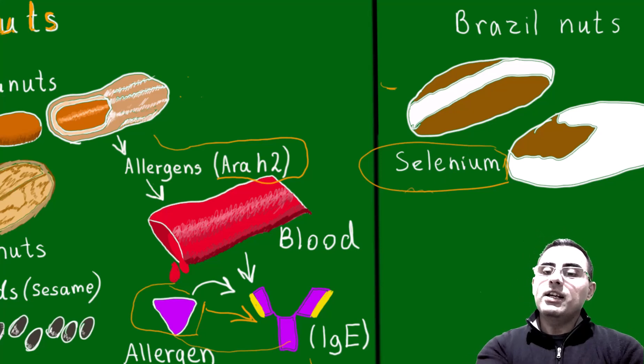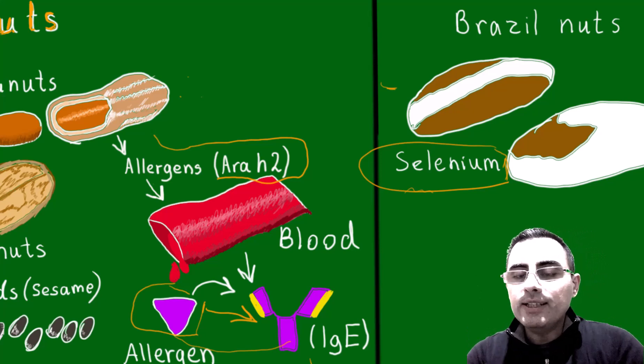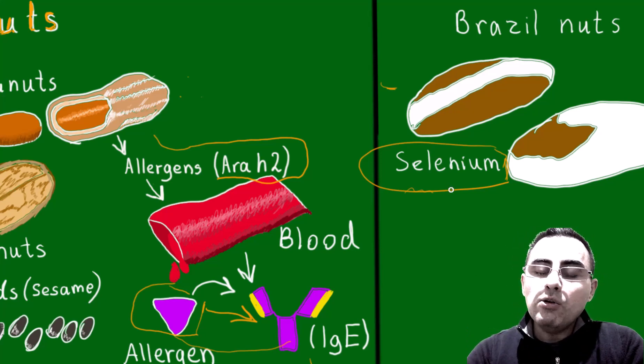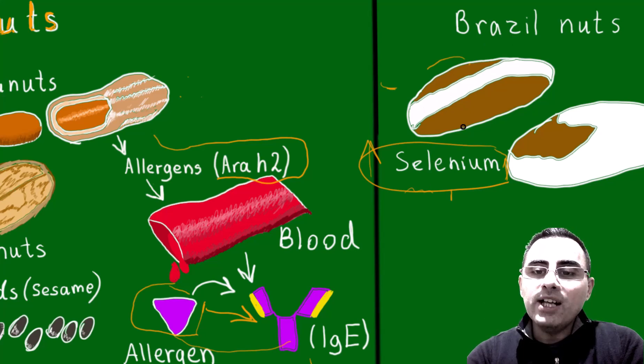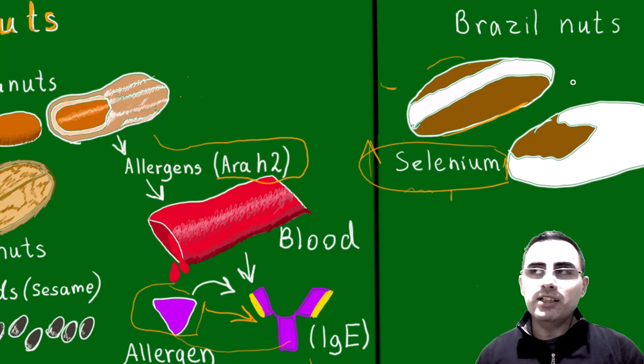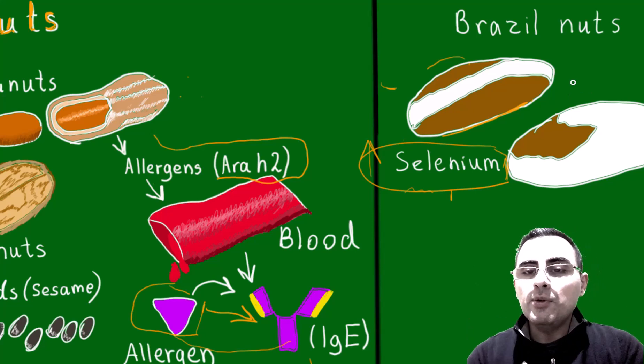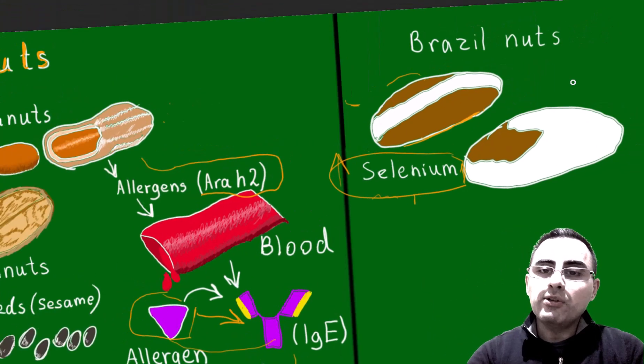Selenium catalyzes many processes, but it's also toxic for our body. Brazil nuts contain high concentration of selenium. Even one piece of nut contains more than the daily allowance of selenium for humans. So if you eat several nuts it's okay, it's normal, it does not cause any important symptoms. But if you eat a large amount of Brazil nuts, it can cause different symptoms.